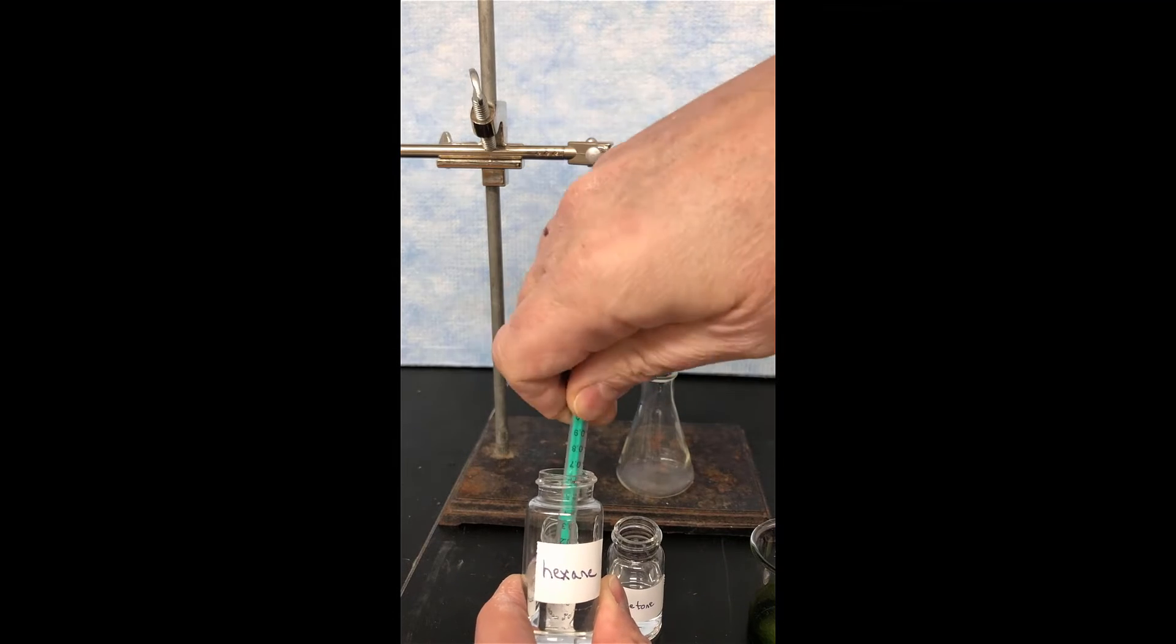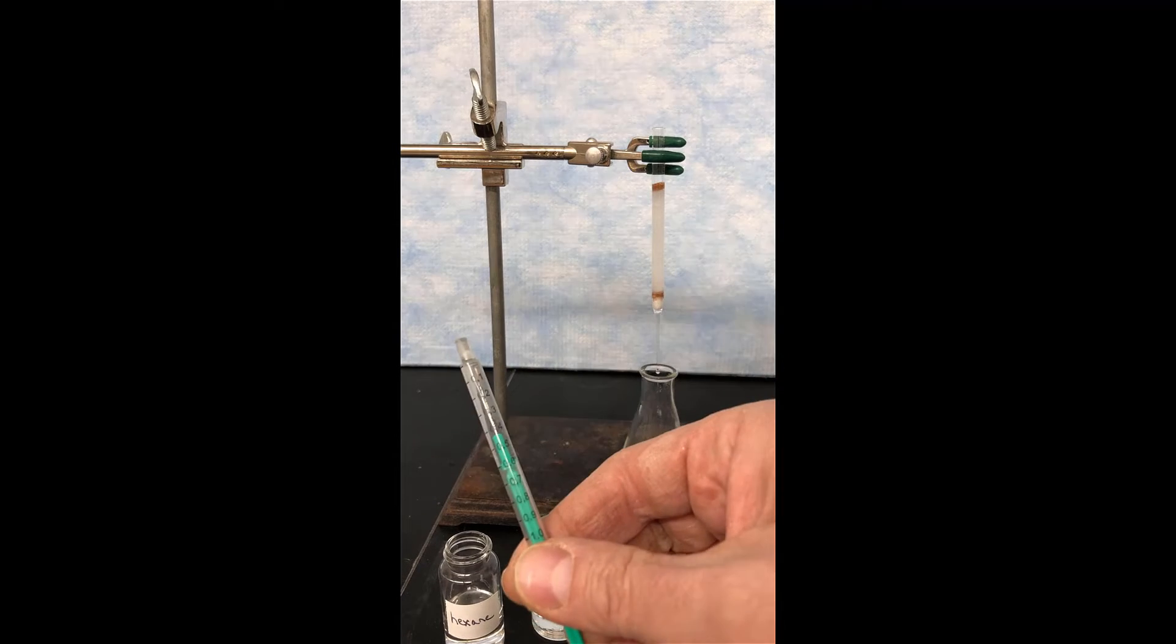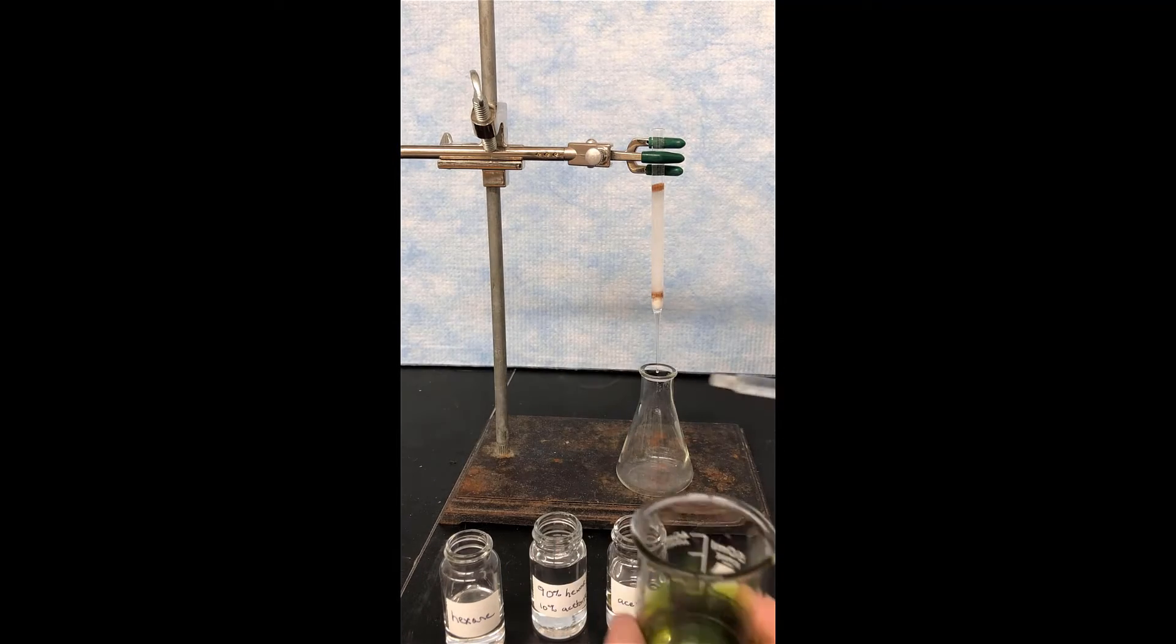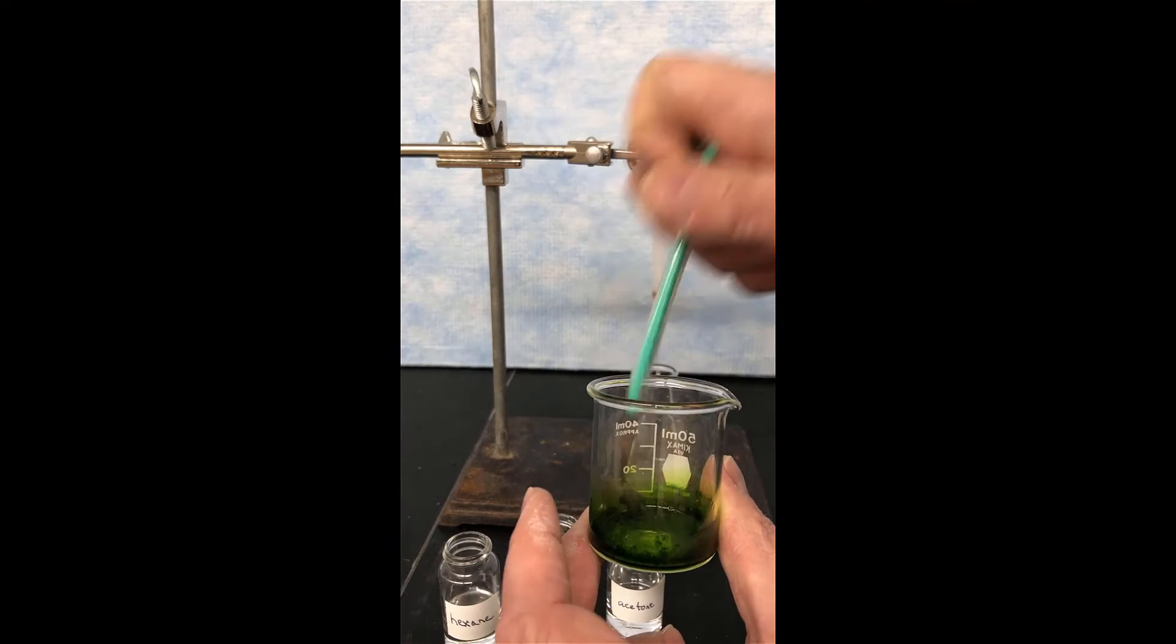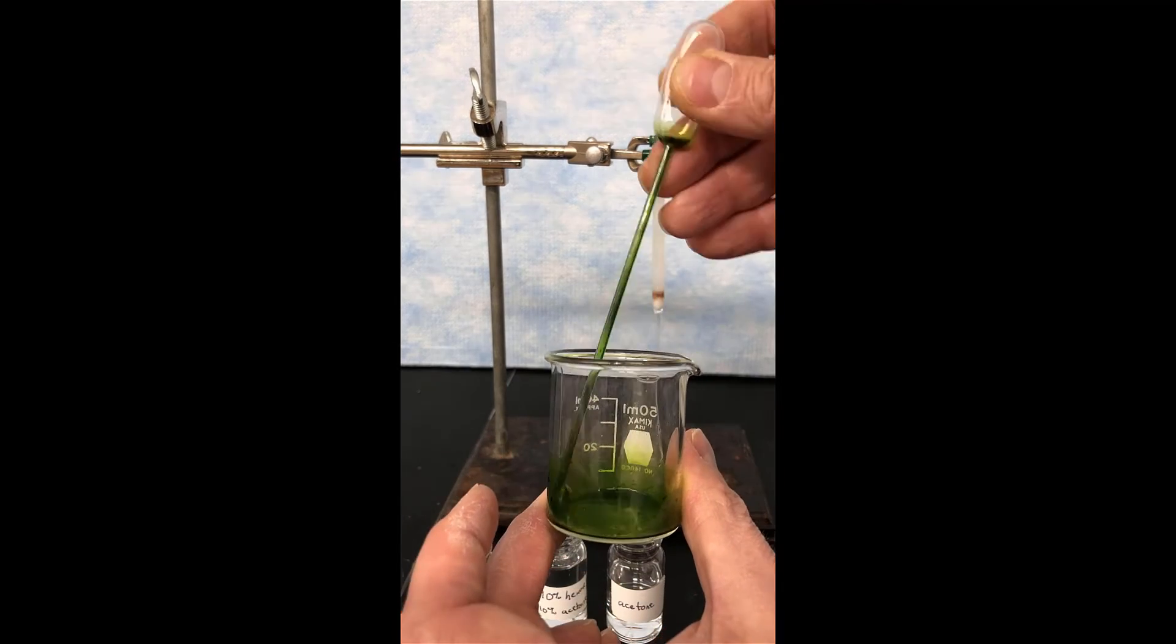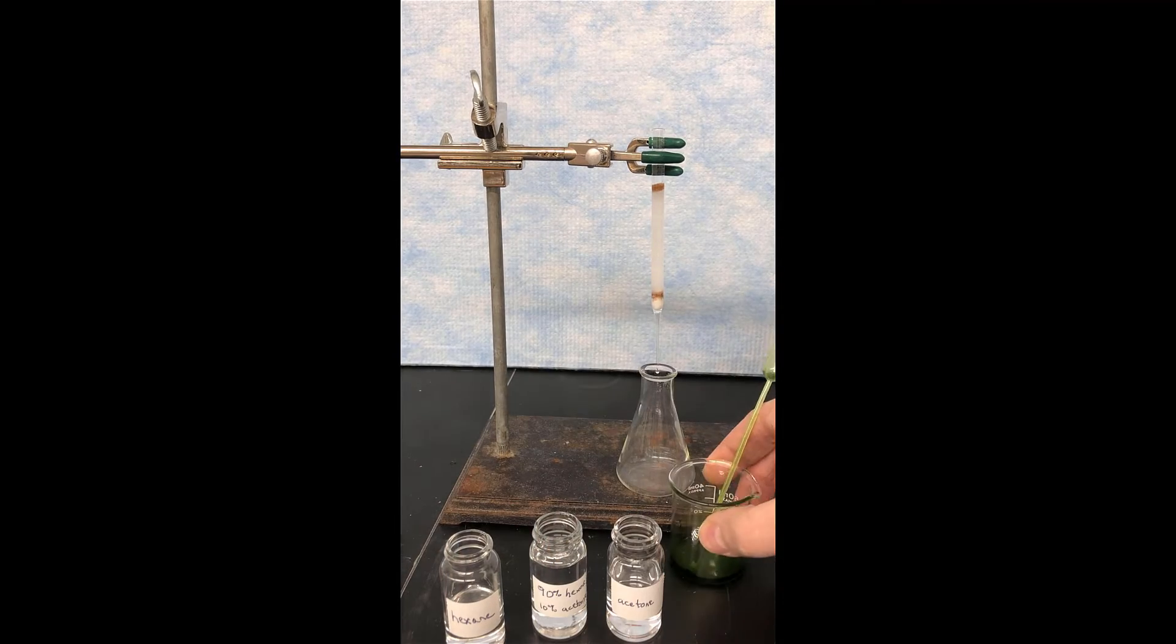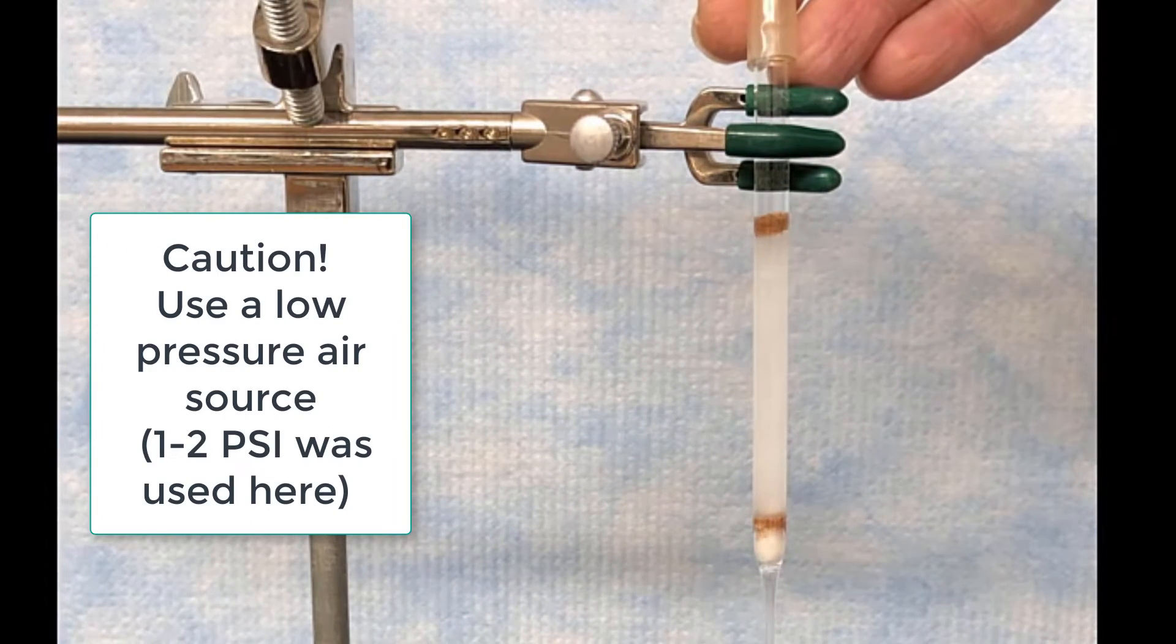So next, we're going to add some hexane to our crude pigment solution. So about a half a milliliter of hexane is going to get added to the crude pigment solution that we prepared in the extraction part of the experiment. So swirl that around with a pipette, get it all dissolved up, then take that solution and pipette it onto the top of the column.